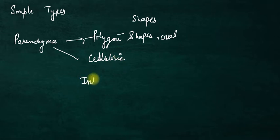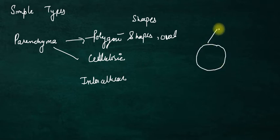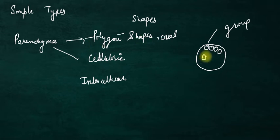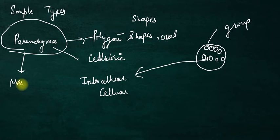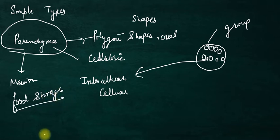Intercellular space means that in parenchyma tissues, the cells are not tightly bound together — there is a little space between them. We say this space is intercellular space, similar to intermolecular space in chemistry. Their main function is food storage. They also perform photosynthesis.